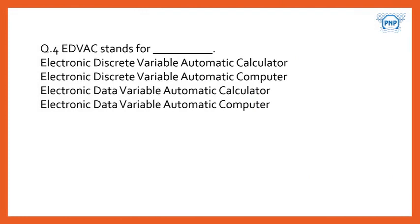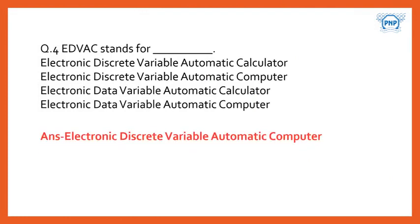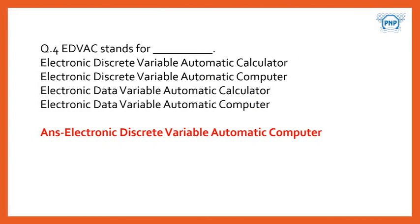EDSAC stands for — we have four options, and the correct option is Electronic Discrete Variable Automatic Computer.